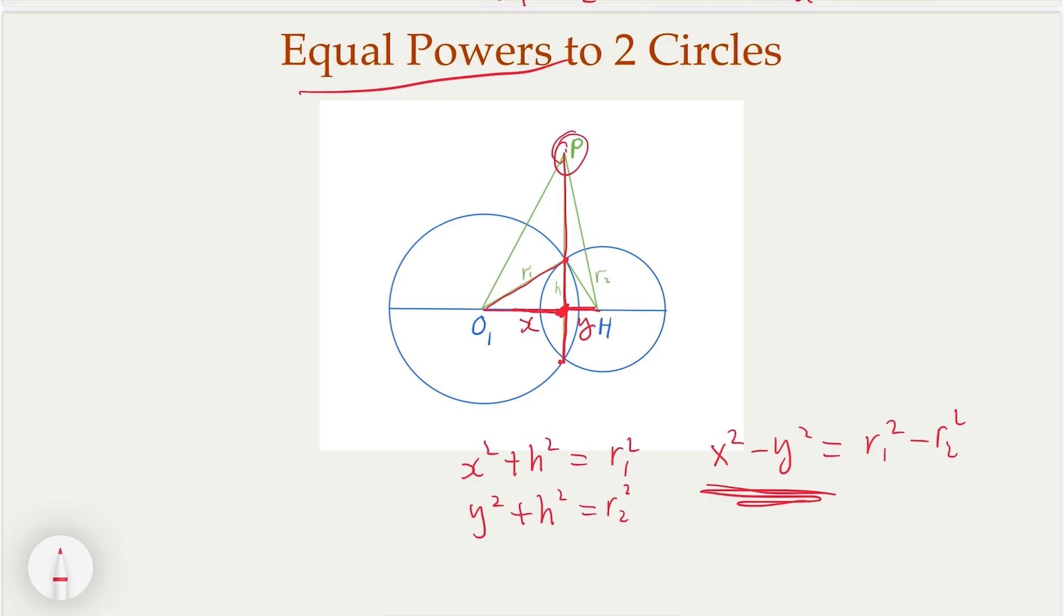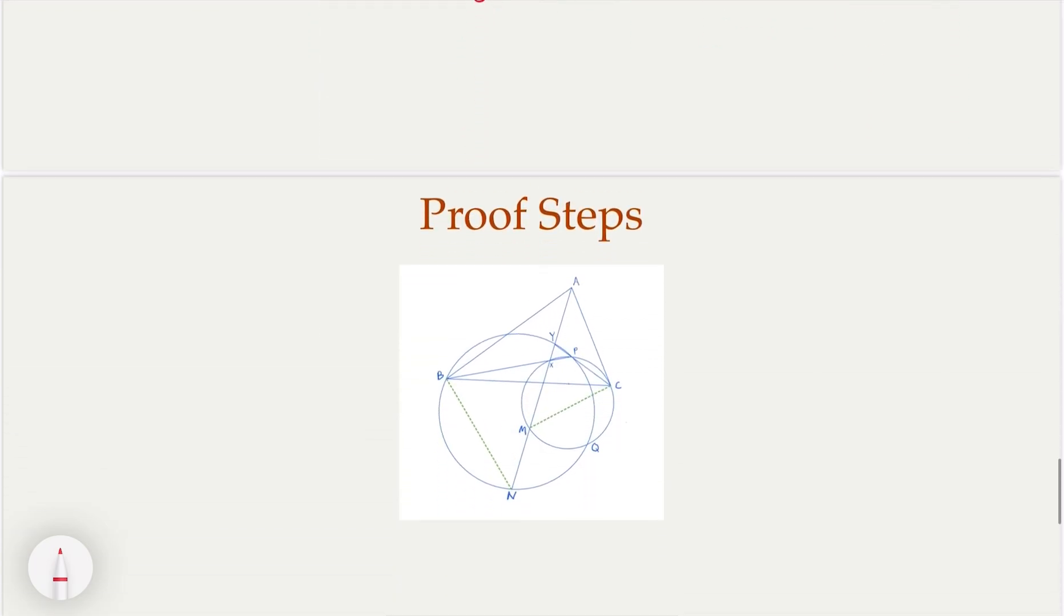In other words, any point, this is a fixed point satisfies the equal power to two circles that we derived earlier. So which means as long as P is on this line, we're going to have equal power and vice versa. If P is equal power, then P has to lie on the same straight line of this. So that's what we use to prove the original problem.